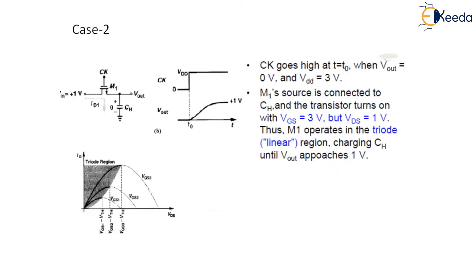Now let us see another case where this Vin is equals to positive 1 volt. You can see here Vin is applied as plus 1 volt and Vout at T equals to T0 is 0 volt. Now VDD is 3 volt again. Here the terminal M1 which is connected to this capacitor acts as the source terminal. In this case where M1 is connected to this capacitor is acting as a source terminal. Why it is acting as a source terminal? Because it is at low voltage, low potential than the drain terminal.